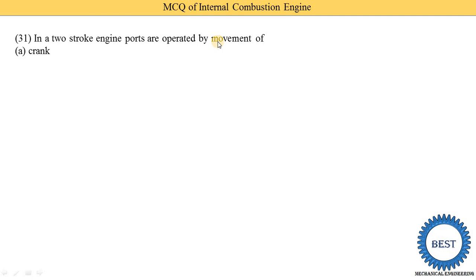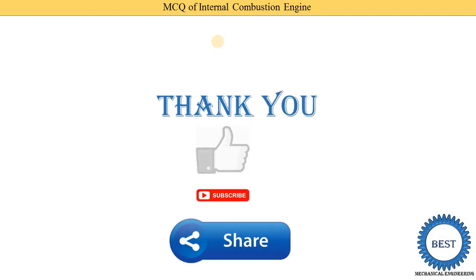Final MCQ: in a two-stroke engine, ports are operated by the movement of — option A: crank, option B: piston, option C: connecting rod, option D: none of the above. The ports are opened or closed due to the movement of the piston, so option B is the correct answer. Thank you for watching — please like the video, subscribe to the channel, and share with your friends.